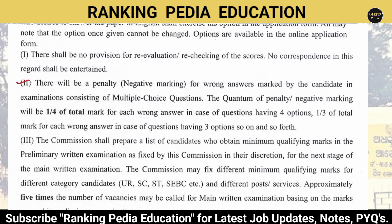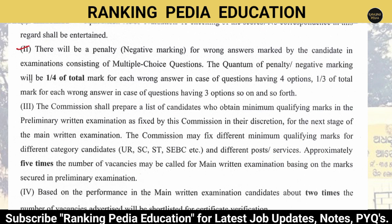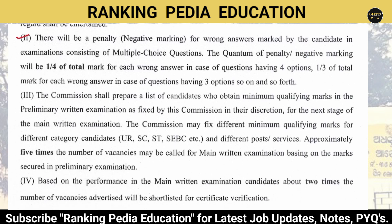Regarding negative marking: one-fourth of total marks is deducted for each wrong answer in questions with four options, and one-third of total marks is deducted for questions with three options.